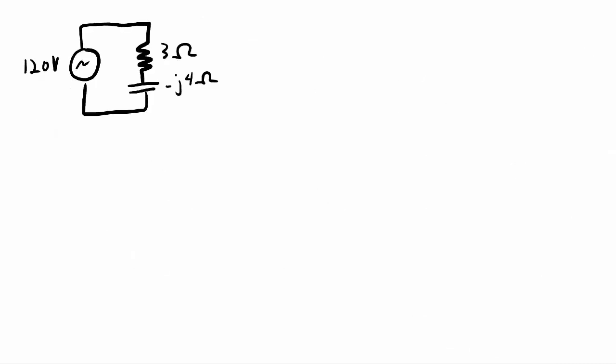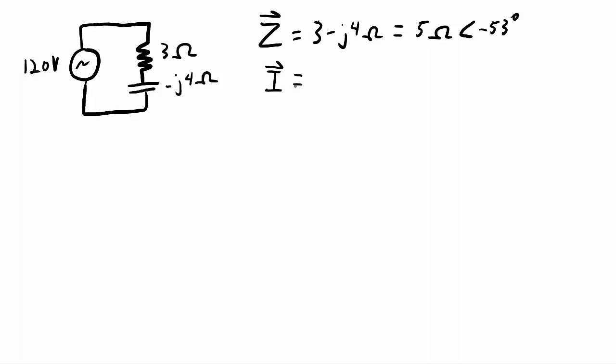A final example shows the relationship between the power triangle angle and the phase angle between voltage and current. A 120-volt source drives a 3-ohm resistor in series with a -j4 ohm capacitor. The total impedance is 3 - j4 ohms, or 5 ohms at a phase angle of -53 degrees. The total current is V over Z, giving 24 amps at a phase angle of +53 degrees — a leading circuit because it is capacitive.